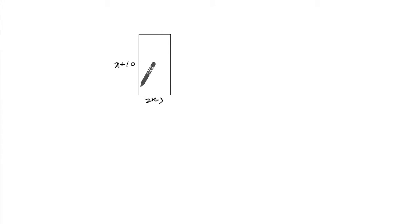We want to find the value of x so that the area is equal to 54. But the area can be represented with x plus 10 multiplied by 2x minus 3. This is the representation of the length and width.